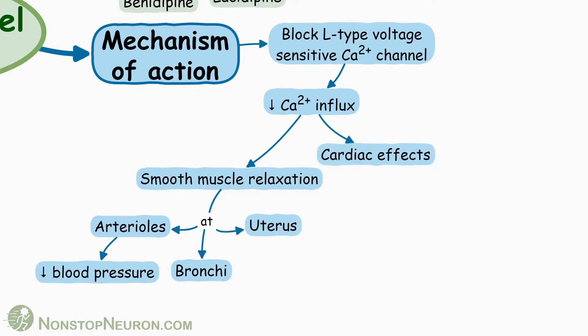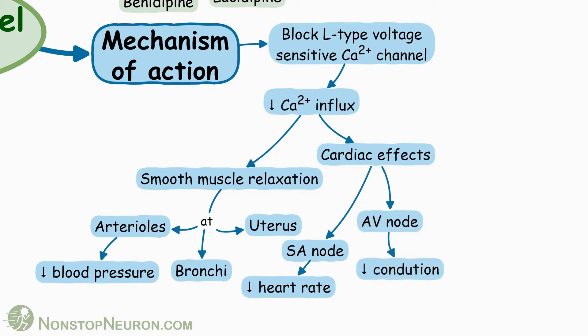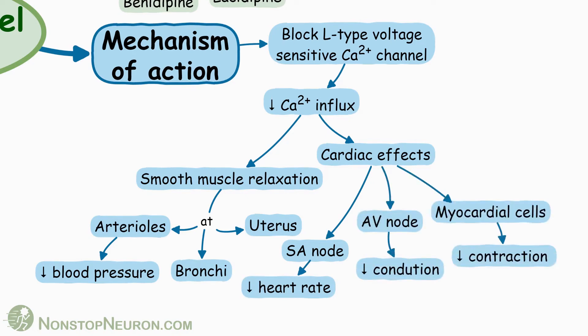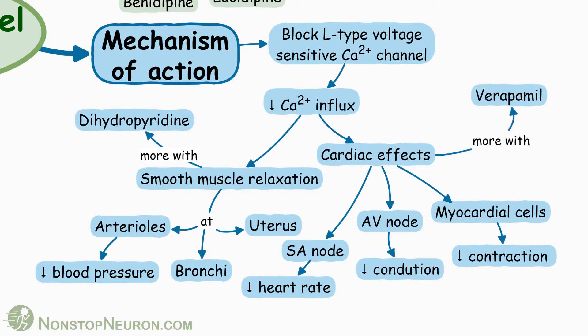Decreased calcium influx in various tissues of the heart produces different cardiac effects. In the SA node, it decreases heart rate. In the AV node, it decreases conduction. And in myocardial cells, it decreases force of contraction. Effects on smooth muscles are seen more with dihydropyridines, and cardiac effects are seen more with verapamil and diltiazem.